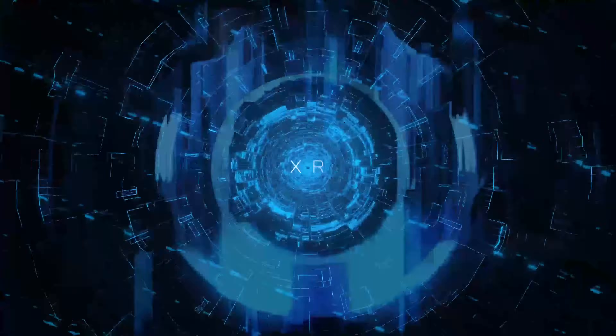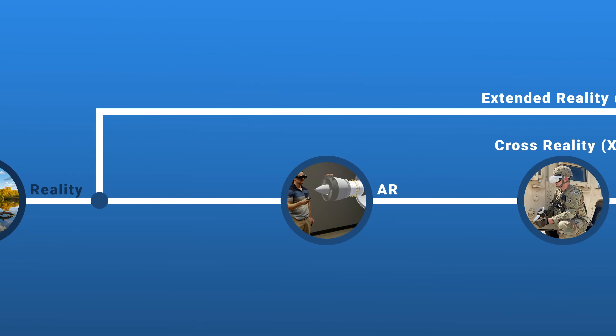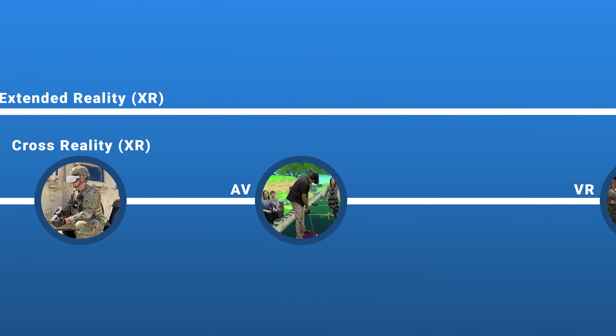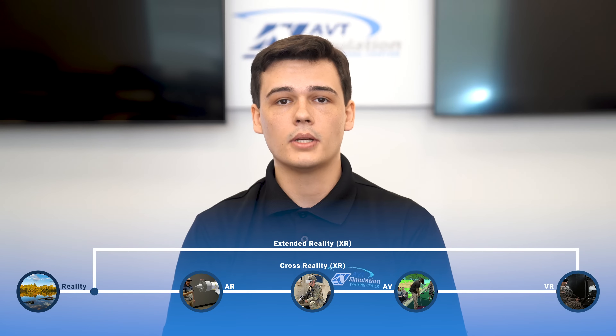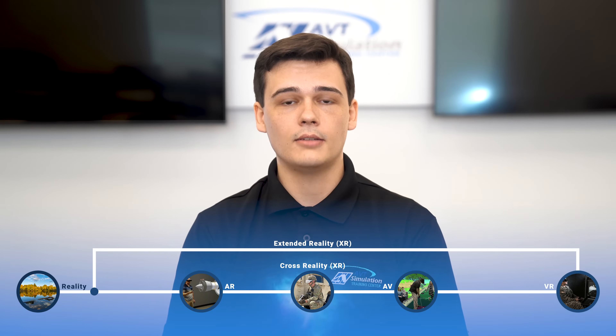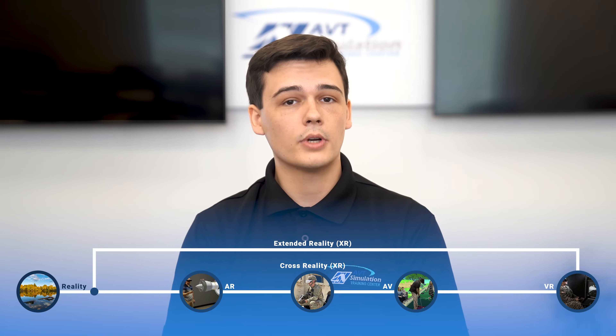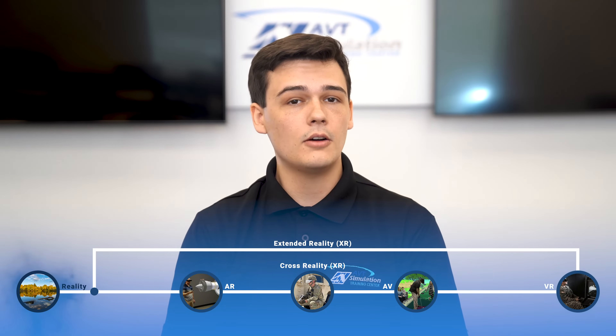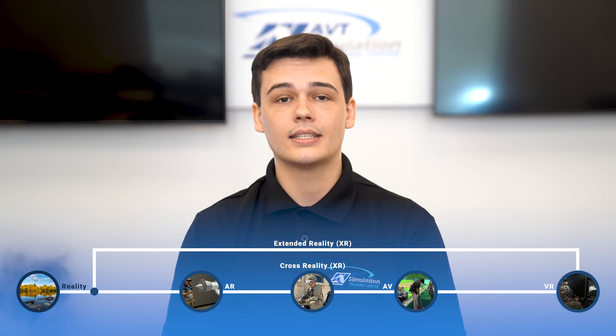Today we'll be discussing extended reality. Extended reality is an umbrella term that refers to the spectrum of the virtual continuum, meaning all real and virtual combined environments are included. These environments are augmented reality, augmented virtuality, cross reality, and mixed reality. Virtual reality is also included in XR at the very end of the spectrum. Reality itself, however, is not included in extended reality, which of course is at the opposite end.